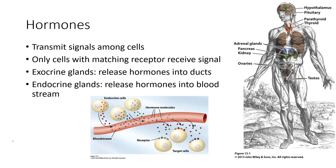Hormones are secreted from two particular types of glands. Exocrine glands release hormones into ducts, which help them stay relatively localized. Endocrine glands release hormones into the bloodstream to circulate throughout the body. In the diagram, we see endocrine cells releasing hormones into the bloodstream, which are sent to different cell types. Only the cell with the particular receptor for a given hormone is able to receive its signal.